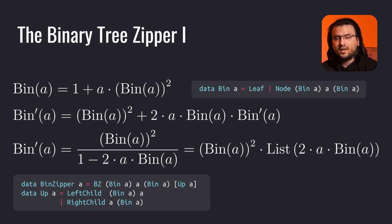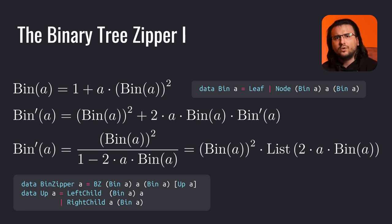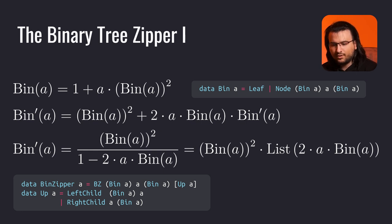Finishing off this lecture with the binary tree zipper. A binary tree can either be an empty node (a leaf), or a node with an element and two children. Instead of solving for bin of a and finding the closed form before taking the derivative, let's immediately take the derivative of this implicit equation. Bin prime of a equals bin of a squared plus 2a times bin of a times bin prime of a. Solving for bin prime of a, we get bin of a squared over 1 minus 2 times a times bin of a. Notice the 1 over 1 minus something sub-expression — this is the same as list of something, which in our case is 2 times a times bin of a. Multiplying by a yields the binary tree zipper, which represents the location in the binary tree — we focus on an element in a node, and that node has two sub-trees.